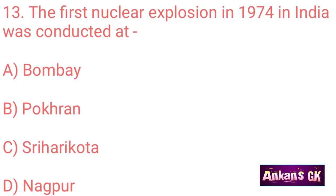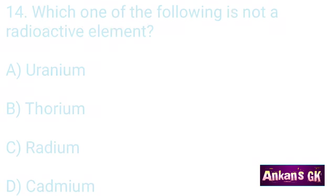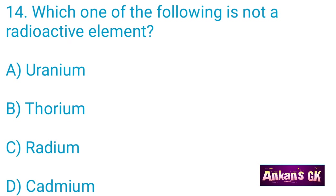The first nuclear explosion in 1974 in India was conducted at — the answer is B: Pokran. Which one of the following is not a radioactive element? The answer is D: Cadmium.